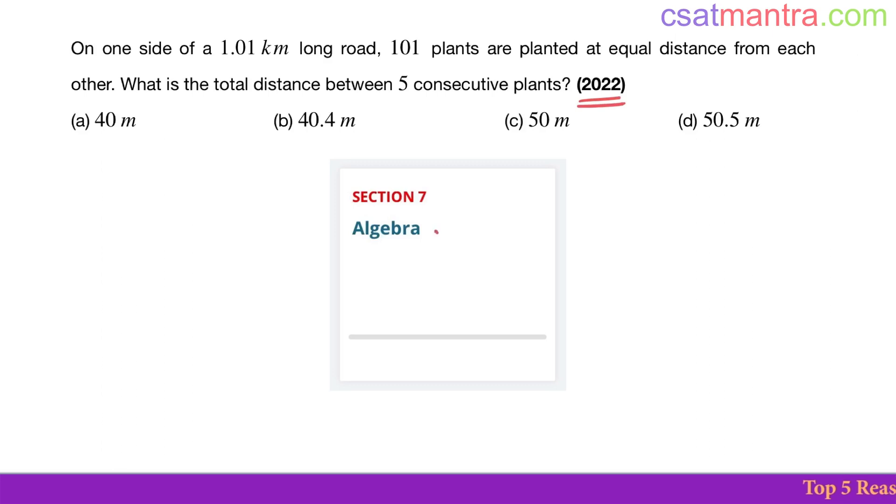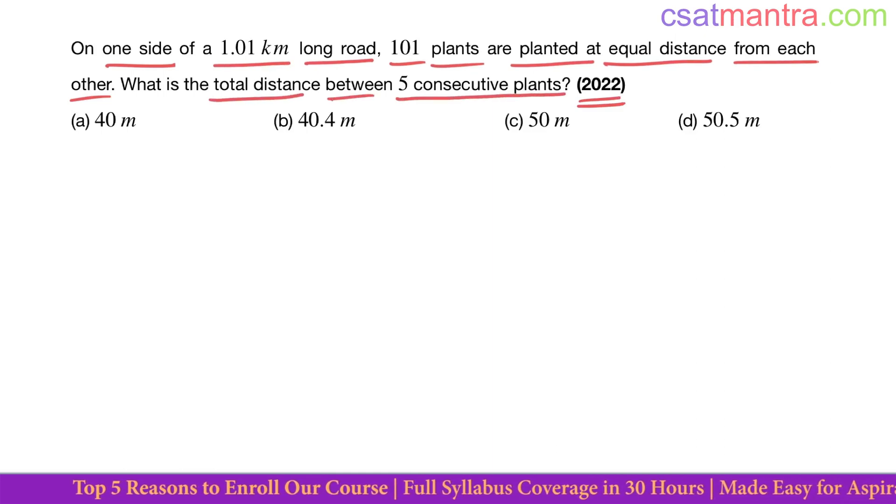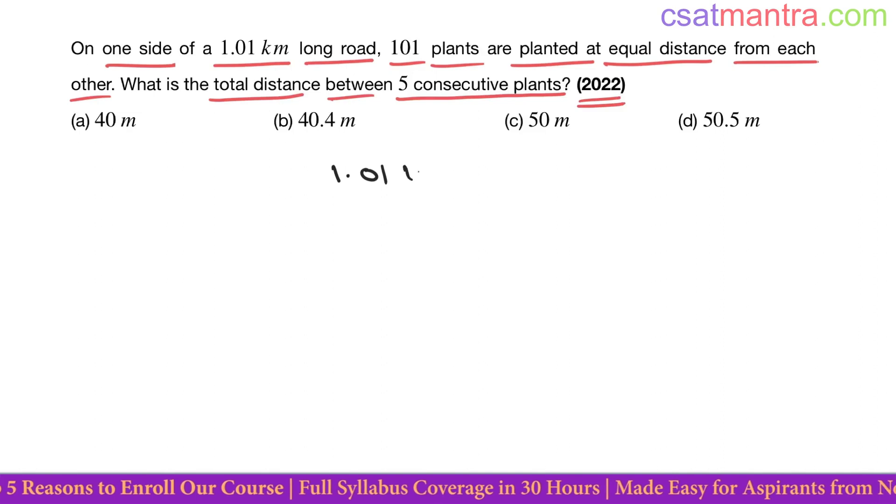2022 question based on algebra. On one side of a 1.01 kilometer long road, 101 plants are planted at equal distance from each other. What is the total distance between five consecutive plants? 1.01 kilometers - let's convert it into meters.